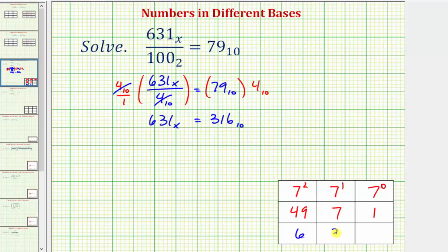So the number 631 in base 7 would be equal to 6 times 49 plus 3 times 7 plus 1 times 1 in base 10. So we would have 6 times 49, which equals 294 plus 3 times 7 is equal to 21 plus 1 times 1 is 1.